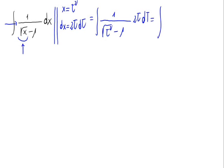This is the same as 2t on the numerator times dt, and on the denominator the square root cancels out, leaving us with t minus 1 in the denominator of the integral.